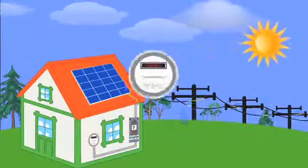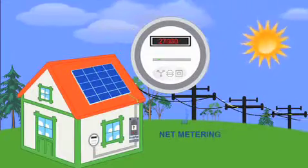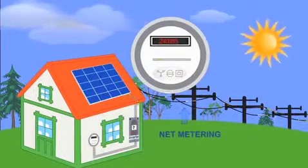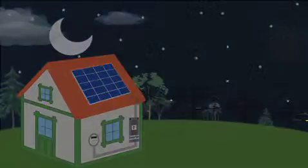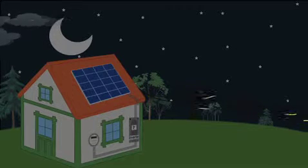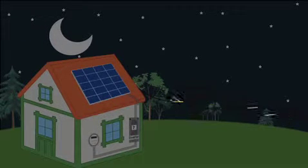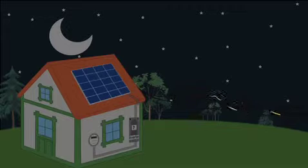and you'll be able to enjoy watching your utility meter spin backwards. Then at night, or on cloudy days when your solar system is not producing enough energy for your home, you'll be able to draw power down from the grid so you never have to worry about running out of electricity.